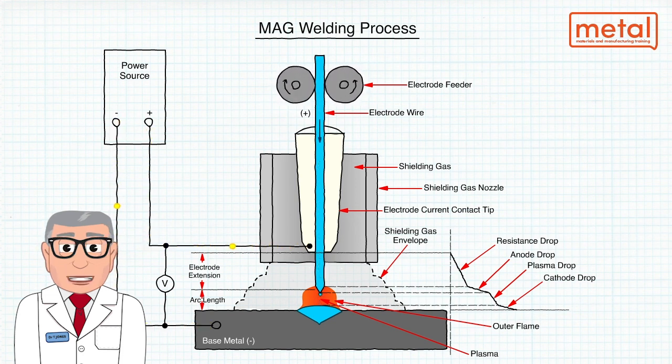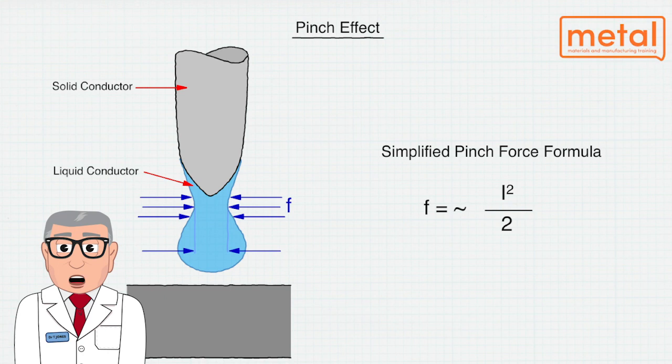The mechanism of transferring liquid metal across the arc gap is controlled by the plasma jet, gravity, surface tension, and electromagnetic forces which together provide what's called the pinch effect.